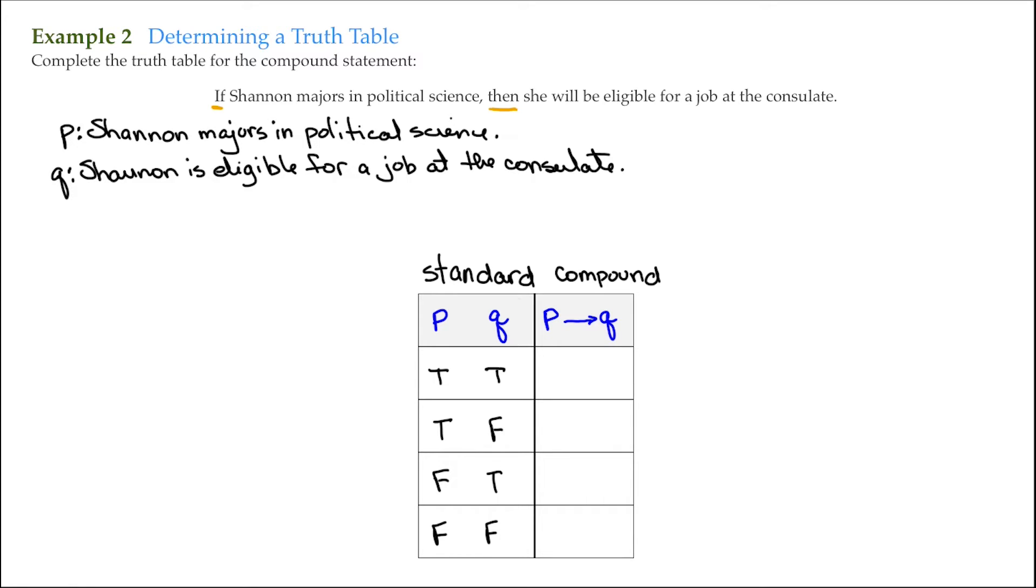And if we remember, the only time this compound statement is false is when the antecedent is true and the consequent is false. That occurs right here. The antecedent is true and the consequent is false. This is when it's false.